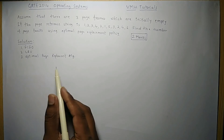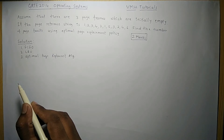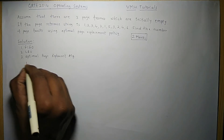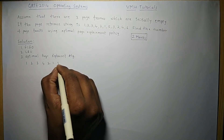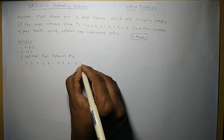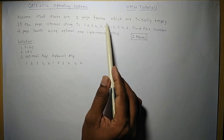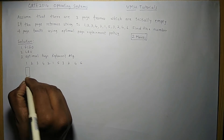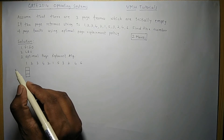Since the problem asks us to use the optimal page replacement policy, we will solve with that method first. Later we will also solve using FIFO and LRU. The page reference string is 1, 2, 3, 4, 2, 1, 5, 3, 2, 4, 6. As stated in the problem, there are three page frames which are initially empty.